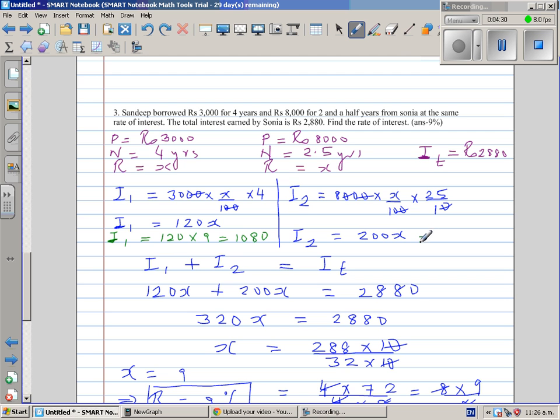And I2 would be 200 times 9, which is 1,800. Let's confirm: 1,800 plus 1,080 is 2,880. So the answer is right.